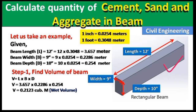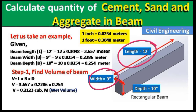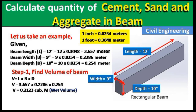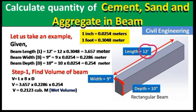This is the real beam which we generally use in a residential building. The dimensions of the beam are: length is 12 feet, width is 9 inches, and depth is 10 inches. If there is a single apostrophe it denotes feet, and if there is a double apostrophe it denotes inches.